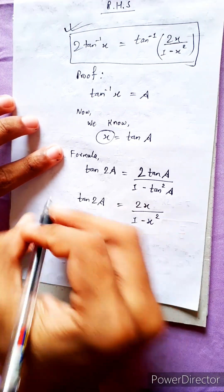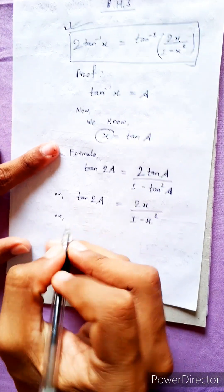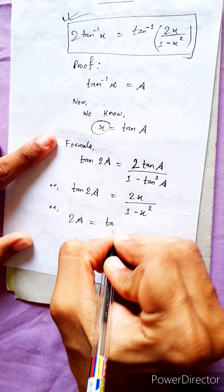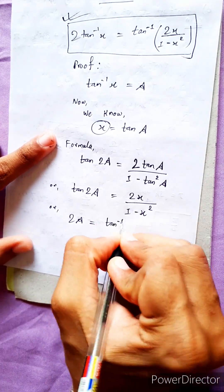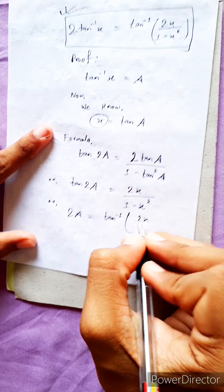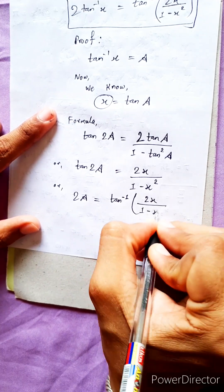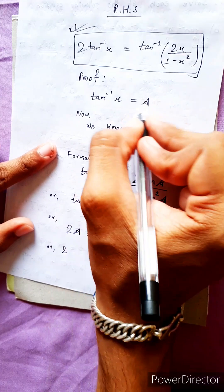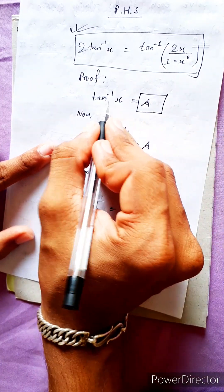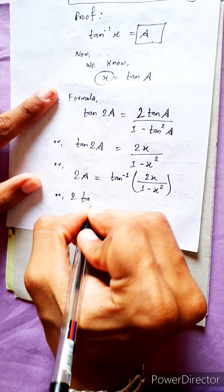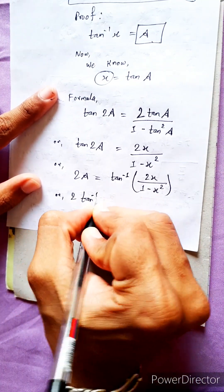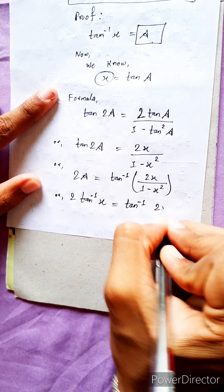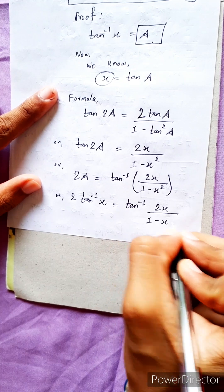This is the proof. Since tan(A) equals x, we substitute: tan(2A) equals 2x / (1 - x²). Therefore 2A equals tan⁻¹(2x / (1 - x²)), which means 2·tan⁻¹(x) equals tan⁻¹(2x / (1 - x²)). Proof complete.